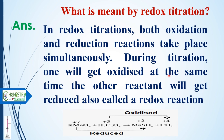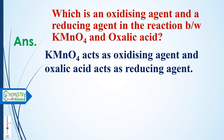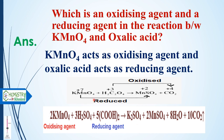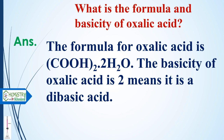In redox titrations, both oxidation and reduction reactions take place simultaneously. One reactant gets oxidized while the other gets reduced at the same time. Here, potassium permanganate is reduced to manganese sulfate and oxalic acid is oxidized to carbon dioxide. Potassium permanganate acts as the oxidizing agent and oxalic acid acts as the reducing agent, since the substance that gets reduced is the oxidizing agent.